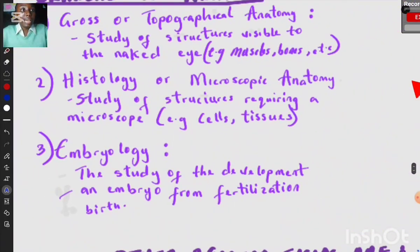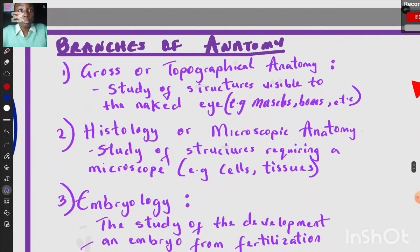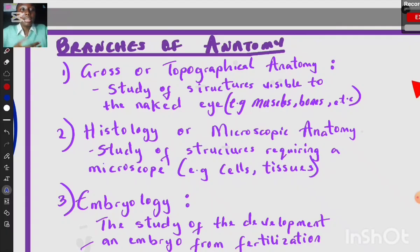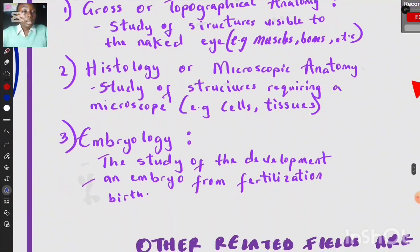The next topic is the branches of anatomy. The first branch is gross or topographical anatomy — this is the study of structures visible to the naked eye, such as muscles and bones. Number two is histology, or microscopic anatomy — this is the study of structures requiring a microscope, such as cells and tissues, which are too small to see with the naked eye.